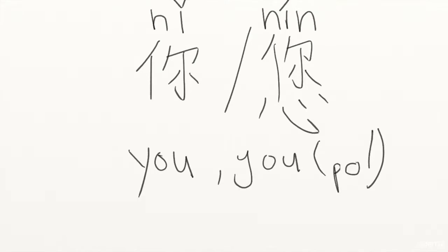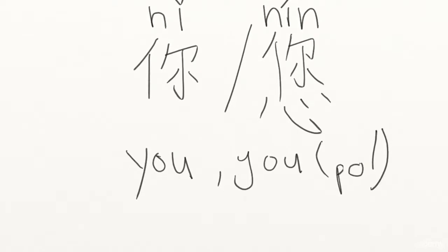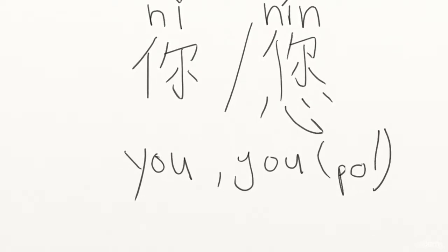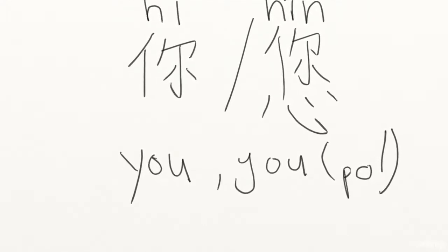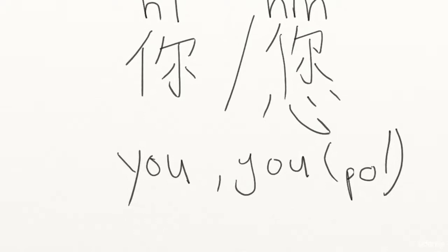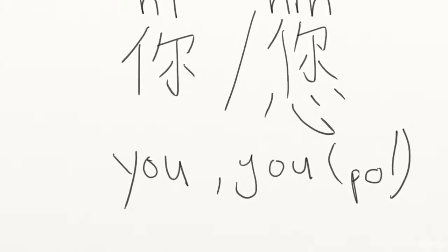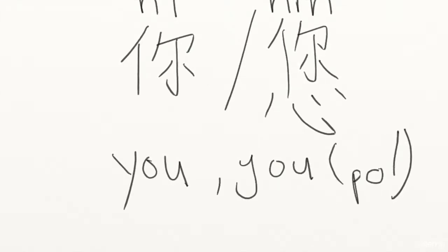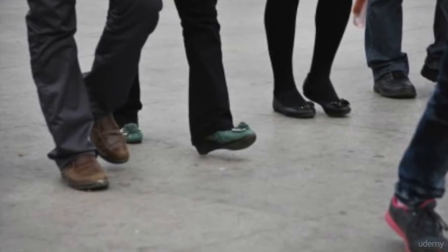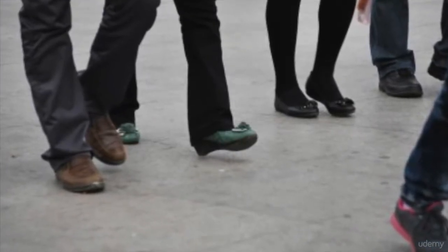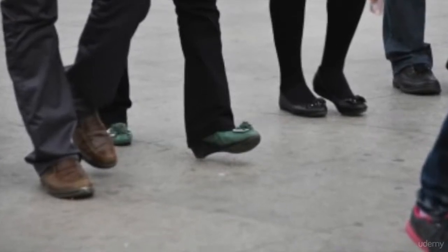你 (nǐ), 您 (nín). 你 means you, which is the informal way of saying you. And 您, as you might recall from the 你好吗 video, is the polite form of you. The way you can remember 你 is to think of knees — your knees are wobbly, 你. Now you try pronouncing 你.